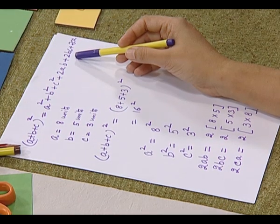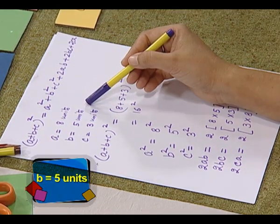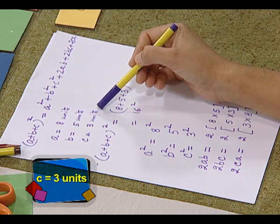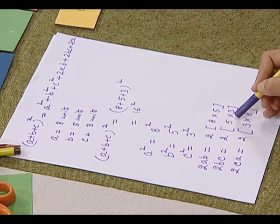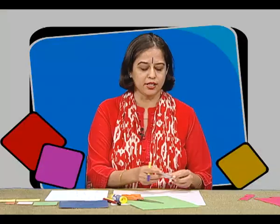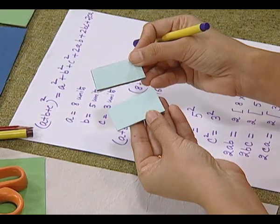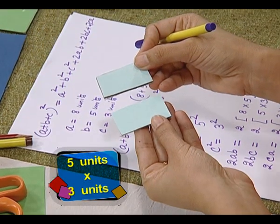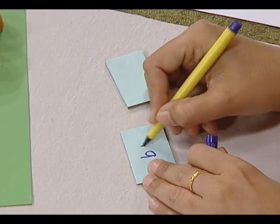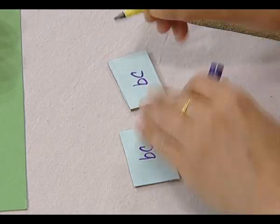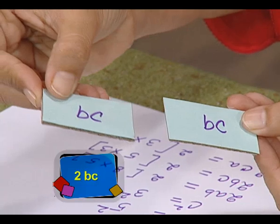Now we will take the representation of 2bc. Here b is 5 units and c is 3 units, so we will take two rectangular cut outs of dimension 5 by 3 units. These are two rectangular cut outs of dimension 5 by 3 units, and we have two rectangular cut outs representing 2bc.